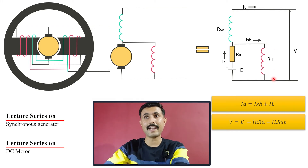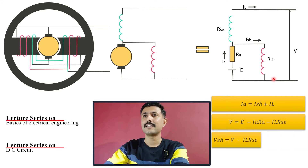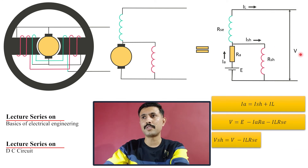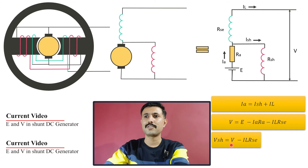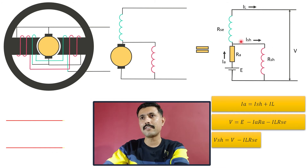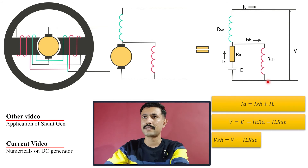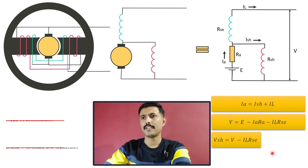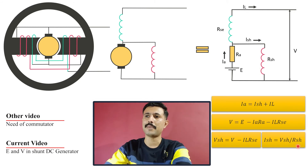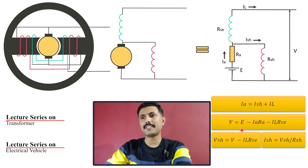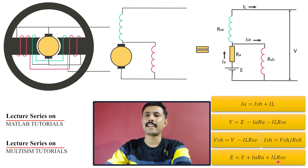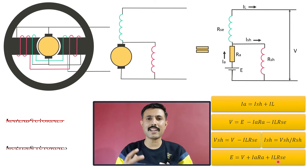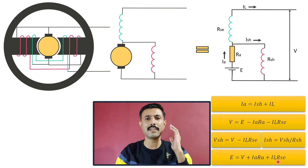The voltage across the shunt terminals, VSH, equals the total terminal voltage V minus the voltage drop across the series resistance: VSH = V − IL × RSE. From this, ISH = VSH / RSH. Rearranging the full KVL equation, we get the induced EMF: E = V + Ia × RA + IL × RSE. This is how you establish the relation between terminal voltage V and induced EMF E.